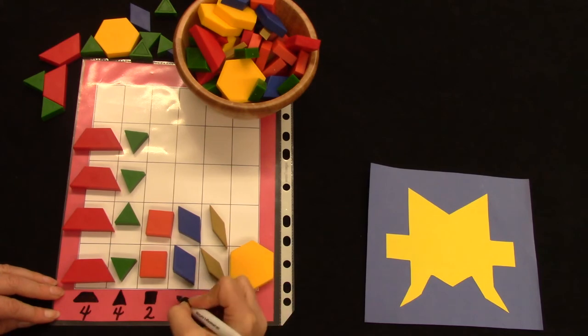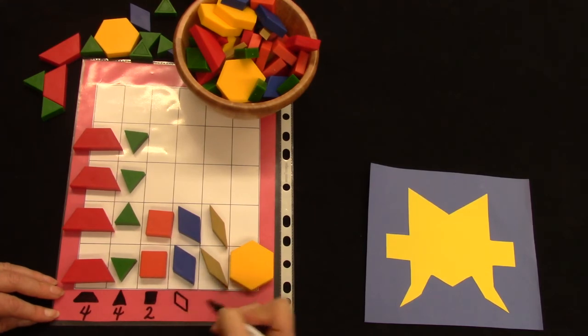And then next comes rhombus and I'm gonna draw my rhombus. There's two sides. One, two, three, four. How many do I have? Two. And this one is super, super skinny. One, two, three, four. Four sides and I have two of those.